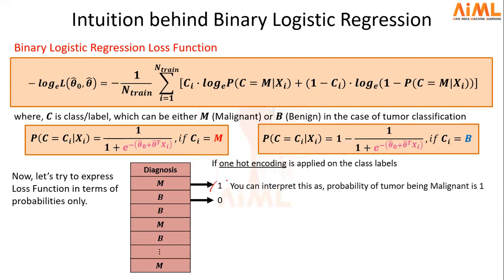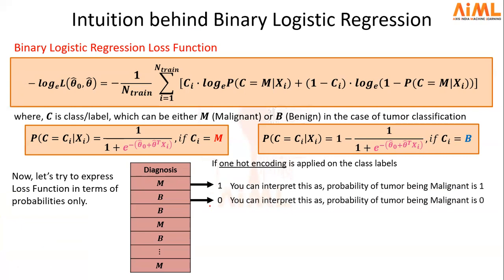This one can be treated as a probability of a tumor being malignant. So for this malignant tumor, the probability of a tumor being malignant is 100%, which is true. On the other side, for the case of benign, this zero can be interpreted as a probability of a tumor being malignant — which means that the probability of a tumor being malignant is 0, and therefore the probability of a tumor being benign is 1, which is the case. So by doing one-hot encoding, we have represented the class levels in the form of probabilities.